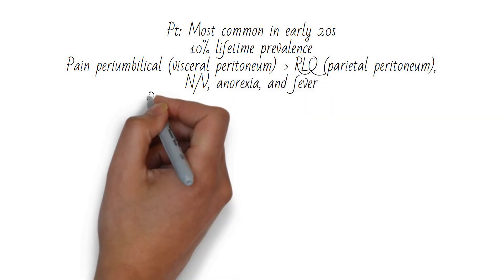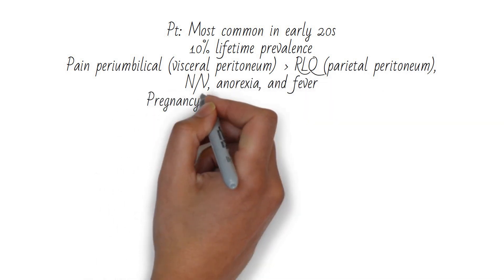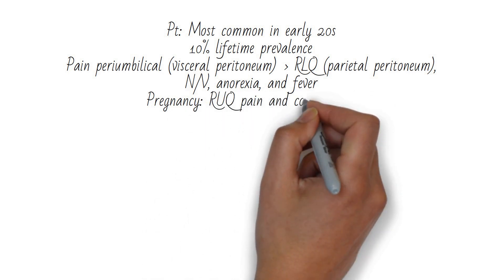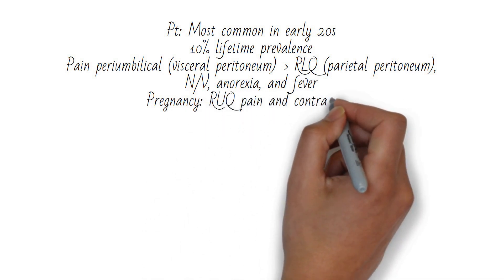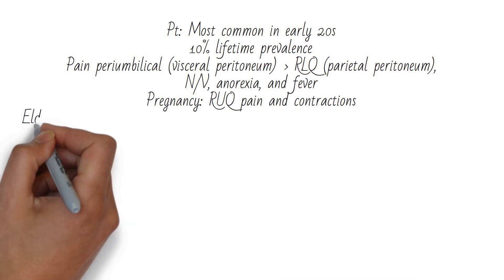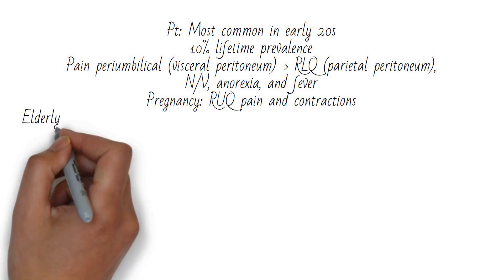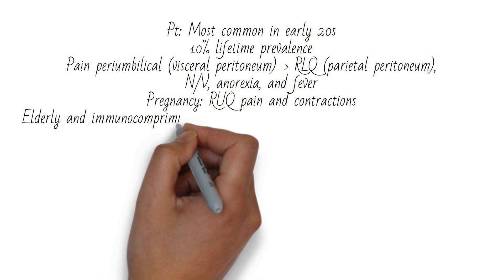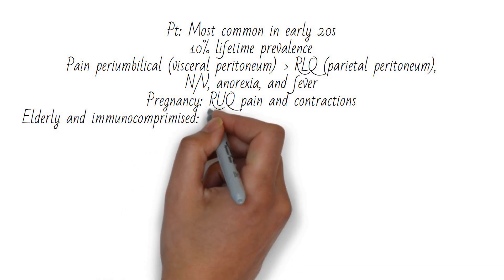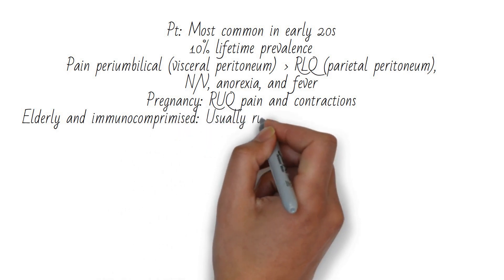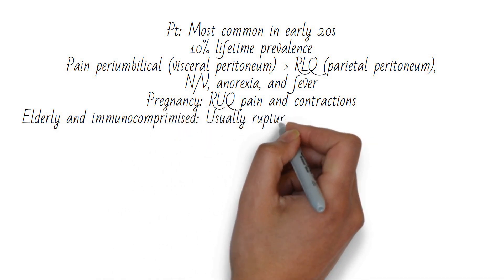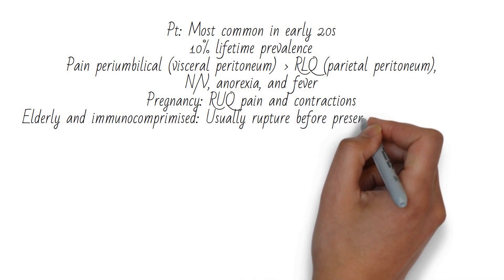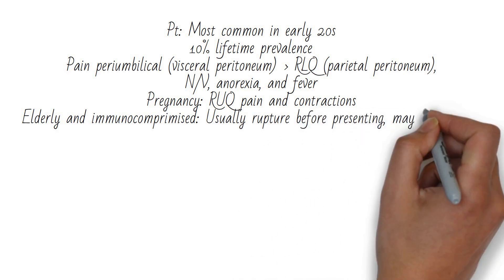Some considerations in pregnant patients are that the gravid uterus can push the appendix into the right upper quadrant, and inflammation can trigger contractions, causing right upper quadrant pain and contractions — which could make you think of gallbladder pathology. The elderly and immunocompromised are more likely to present after rupture, and they may have altered mental status.